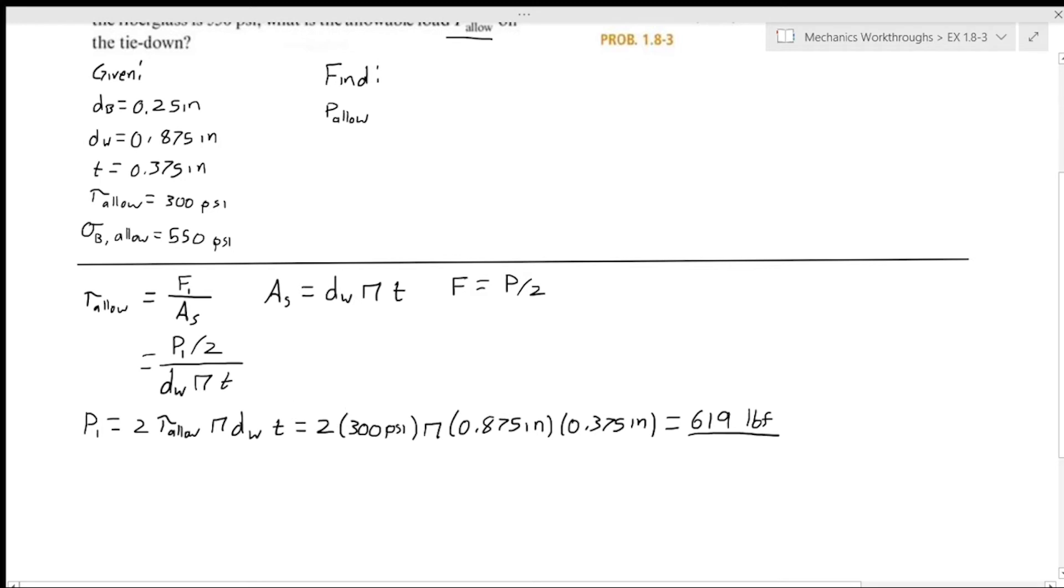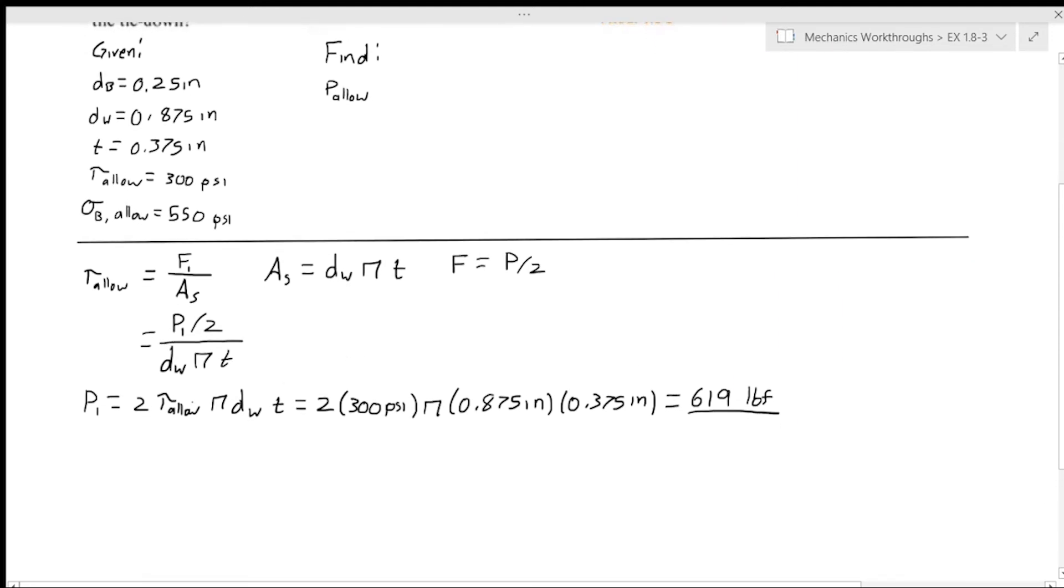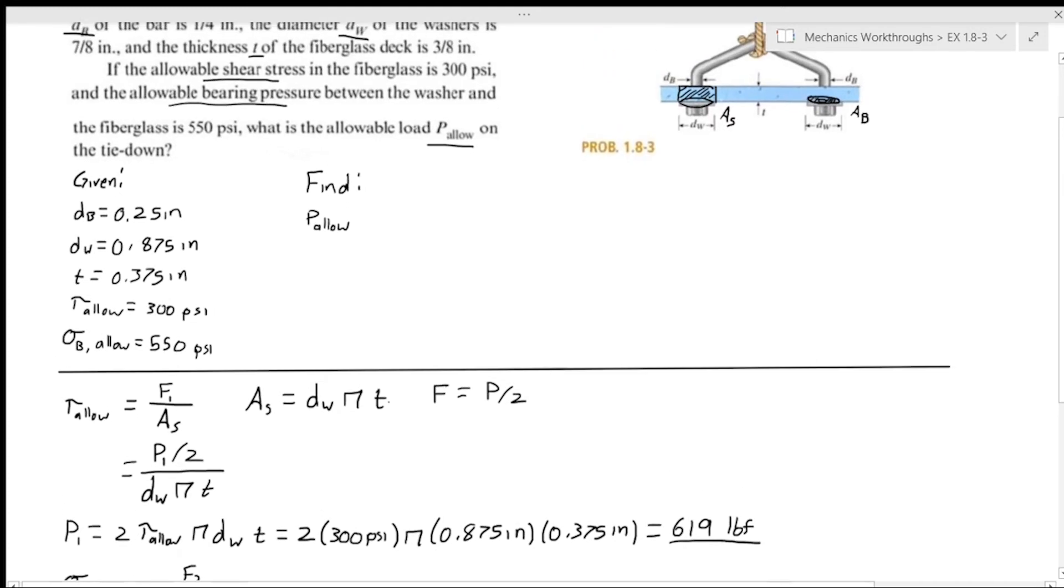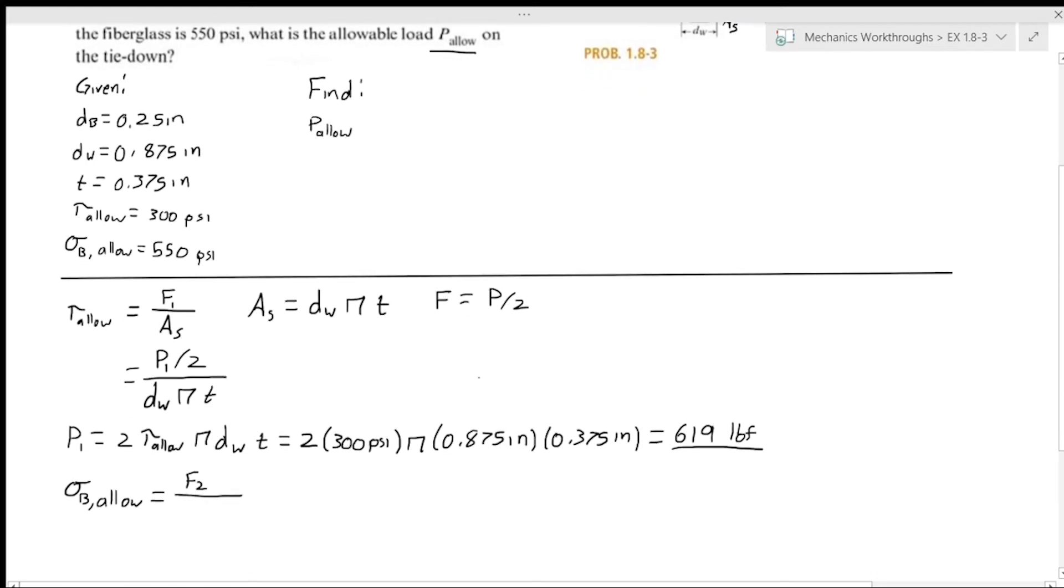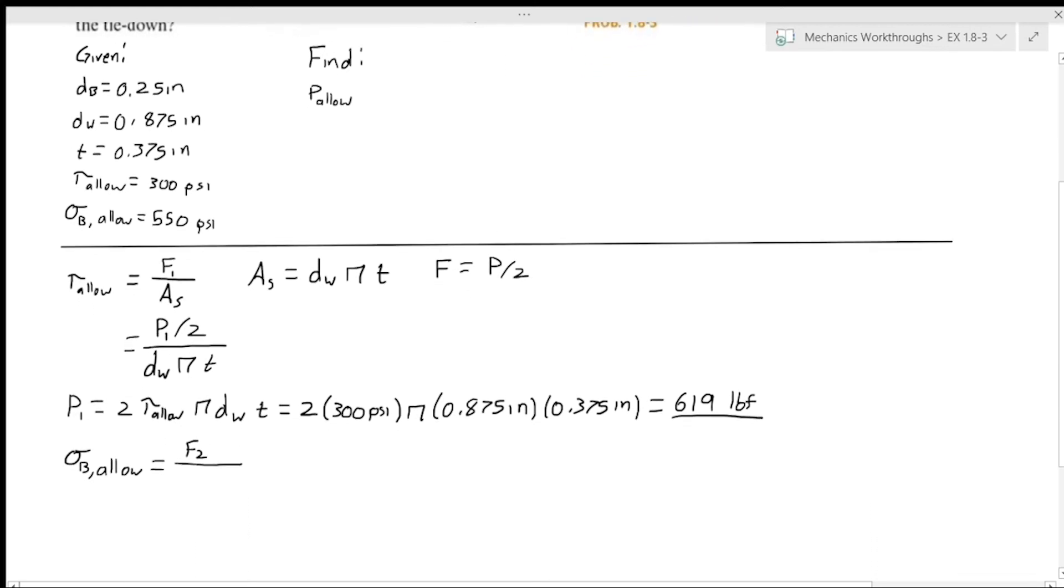Now we move on to the part that has to do with the bearing stress. We have our allowable bearing stress. Again, this is going to equal a force over an area, we'll call it F2. This is the allowable force on one side of this problem due to the bearing stress. And then our area is going to be our bearing area.